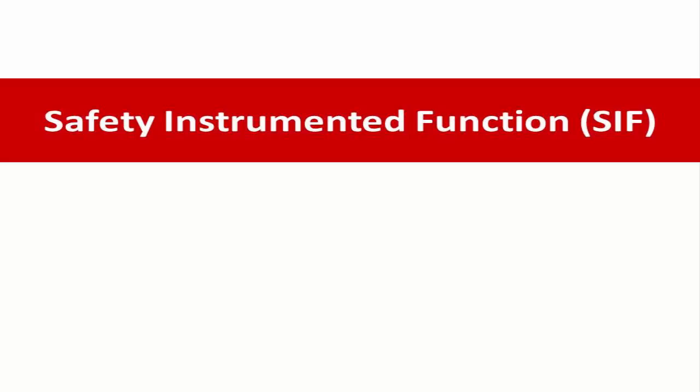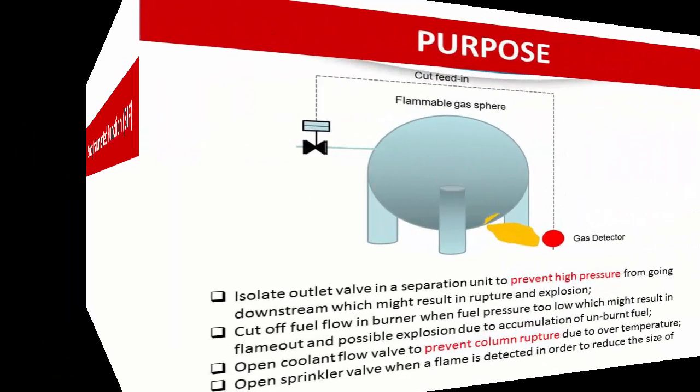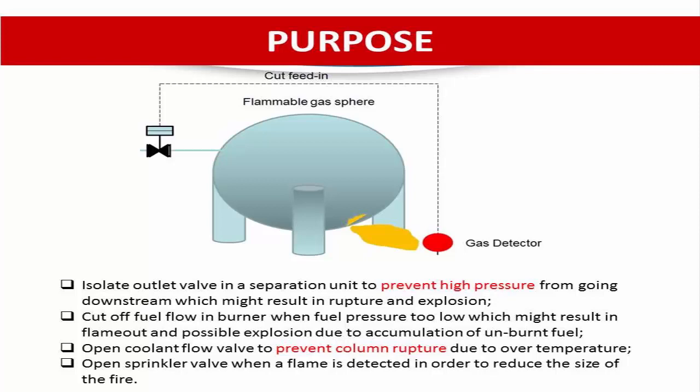A Safety Instrumented Function, or SIF, is defined based on ISA 84.00.01 or IEC 61511. It is a safety function with a specific Safety Integrity Level which is necessary to achieve functional safety — a function to be implemented in a Safety Instrumented System, or SIS, intended to achieve or maintain a safe state for the process with respect to specific hazards.